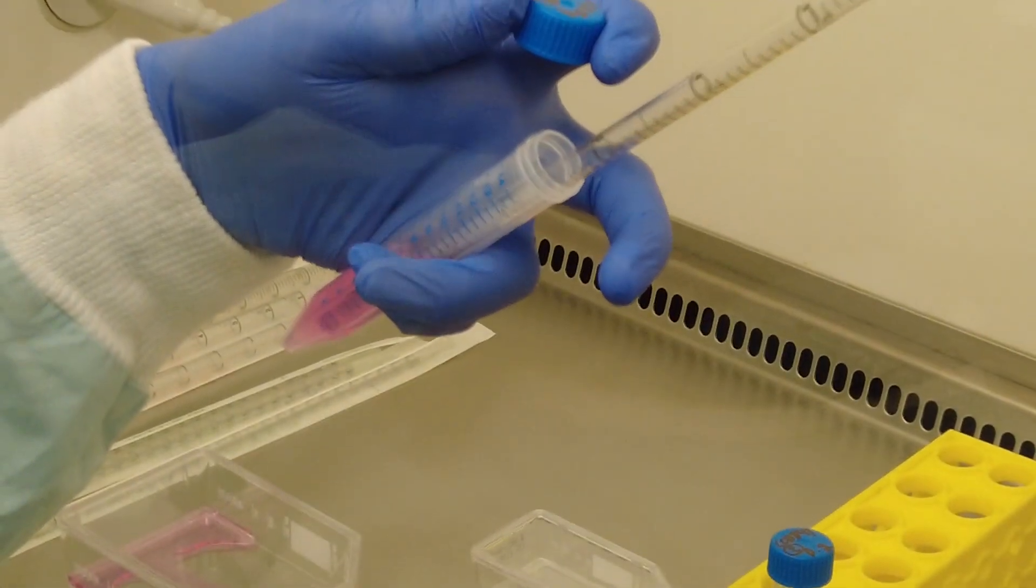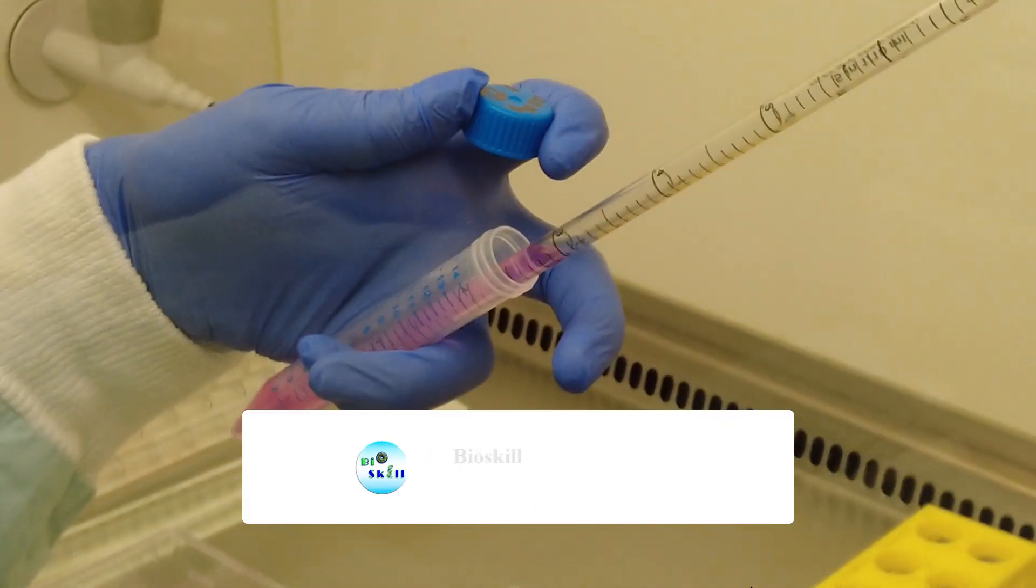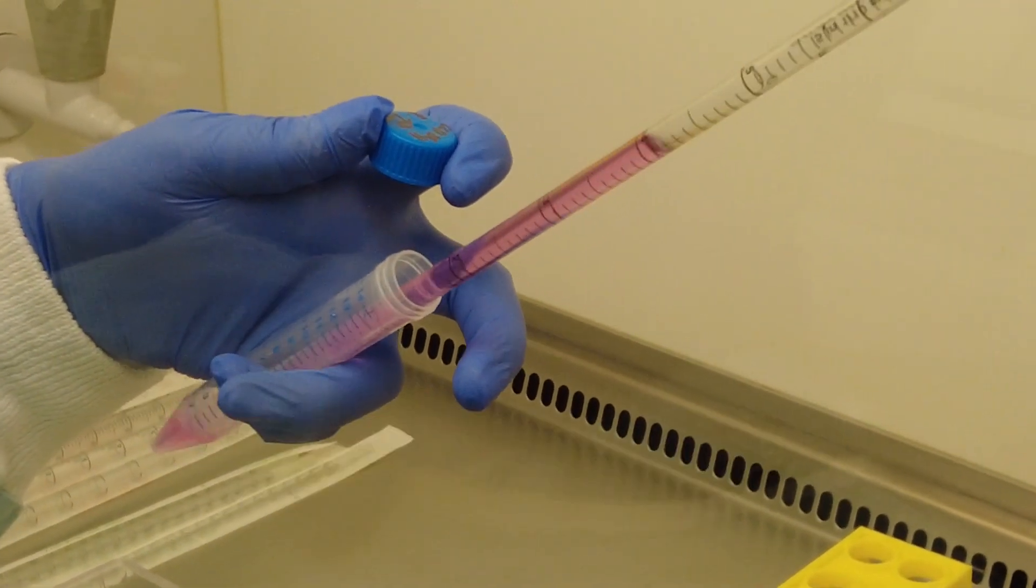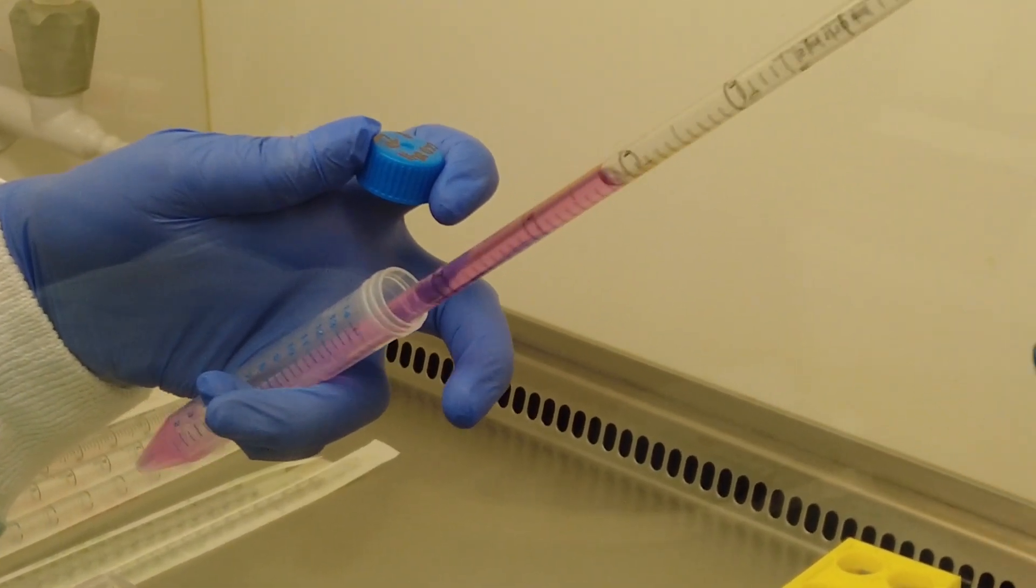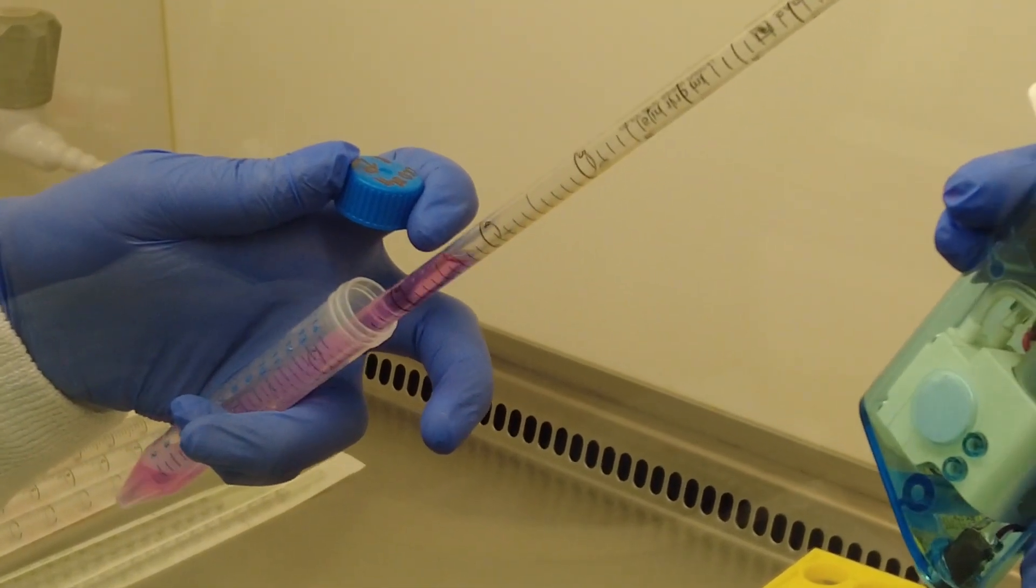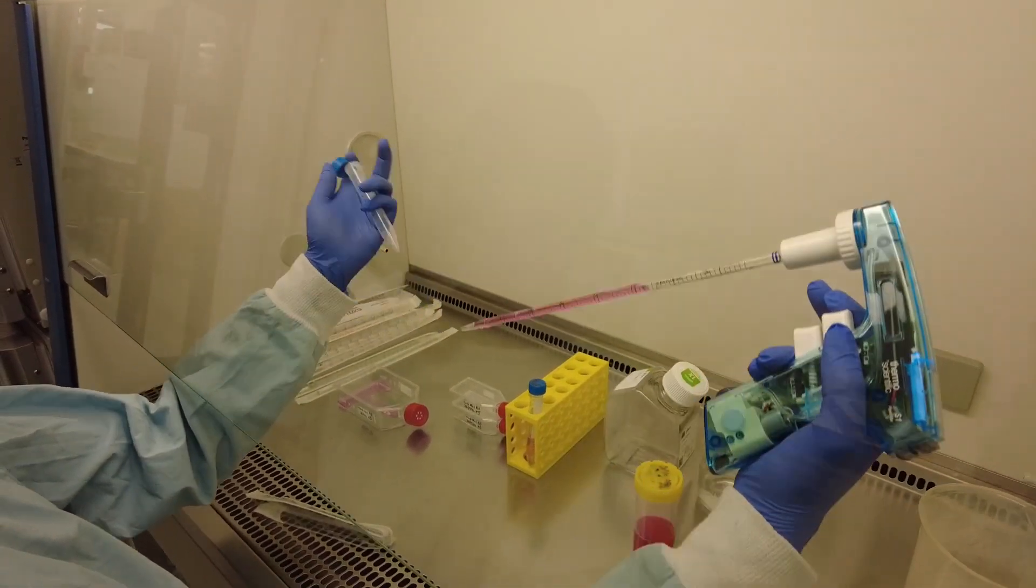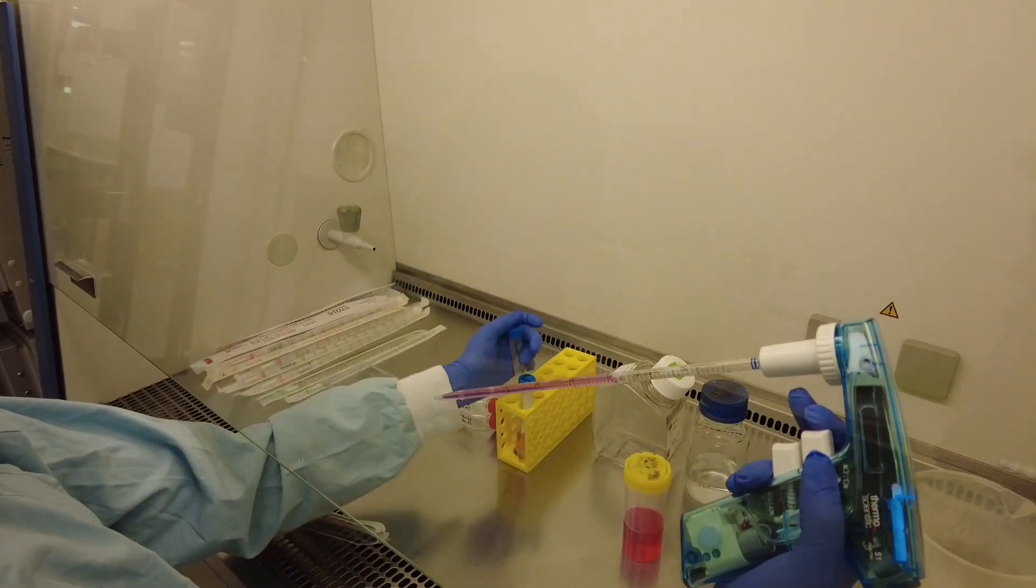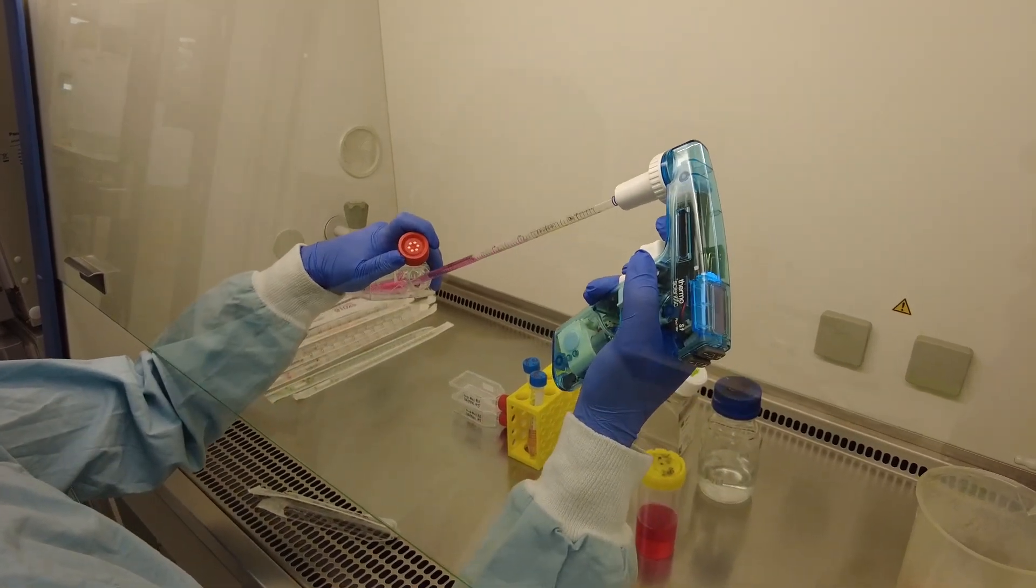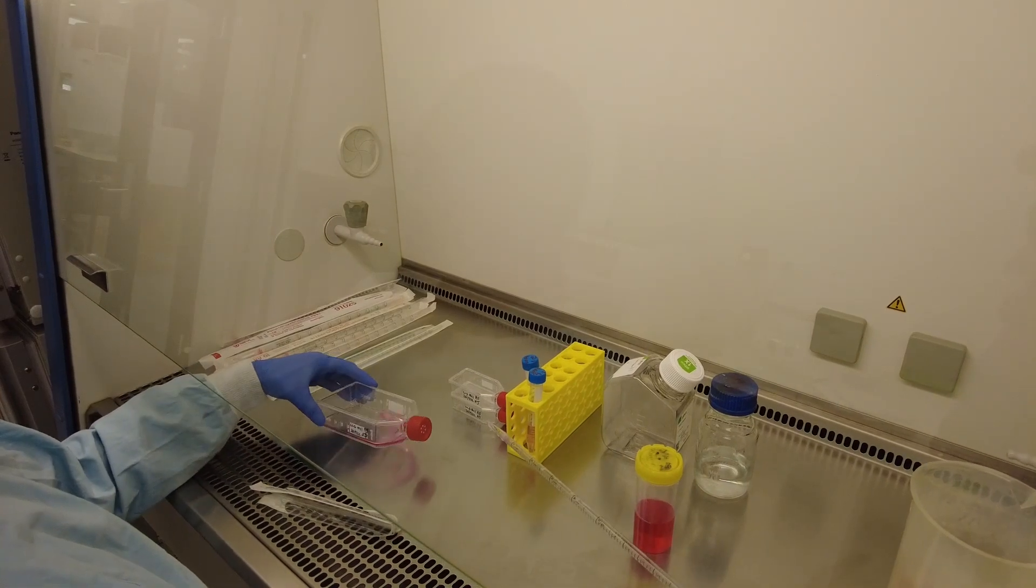Then we're going to add fresh media into the centrifuge tube. So we're going to pipette up and down just so we can disperse the pellet of cells. Collect everything out of the tube. That's the first one done.